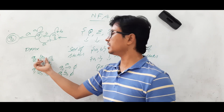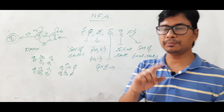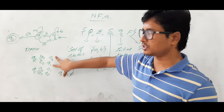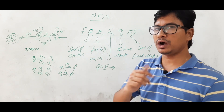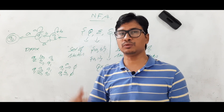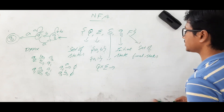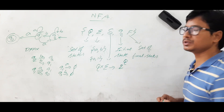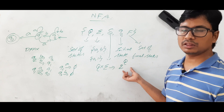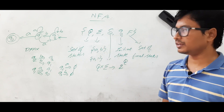So from a state, on taking some alphabet, you can go to more than one state, or you may not go to any state at all. The transition function of an NFA maps to 2^Q — the power set of Q. From a state by taking an alphabet, you can go to all the states in the finite automaton or you may not go anywhere.